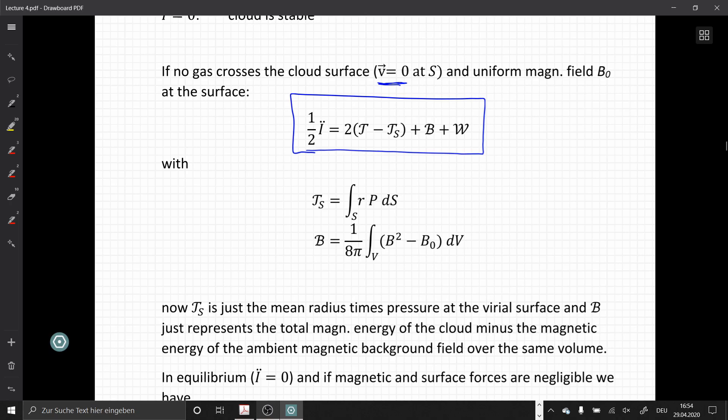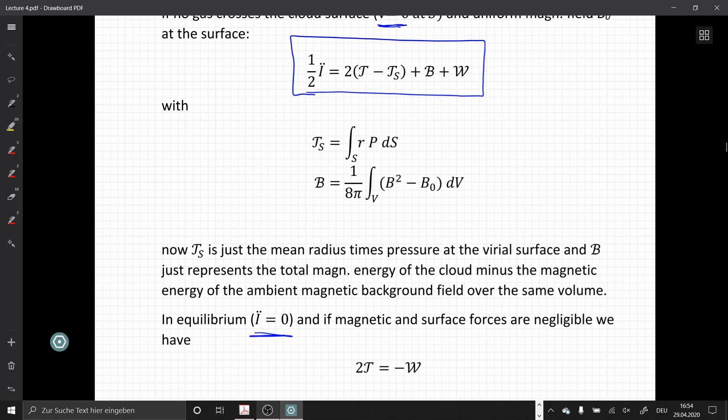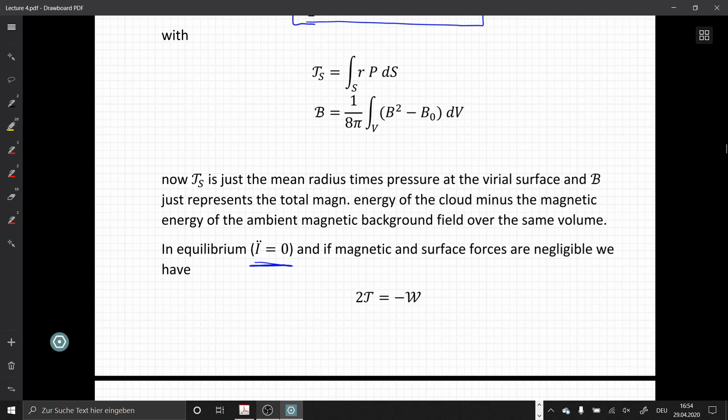If we now assume equilibrium, so we set the left hand side to zero, and if we assume that all the forces on the surface and all the magnetic forces are for the moment negligible, we just have the very simple form of the virial theorem that you might recall from other lectures, which states that in equilibrium, two times the kinematic energy equals the negative potential energy.